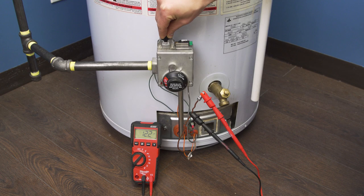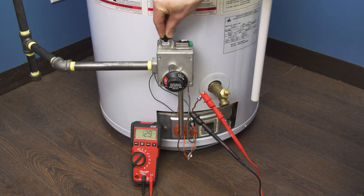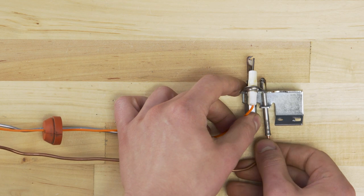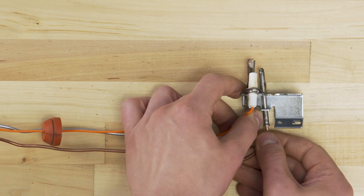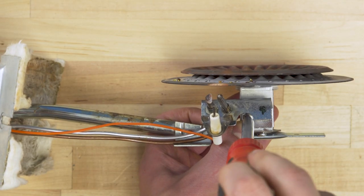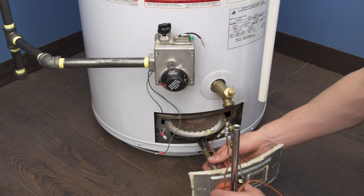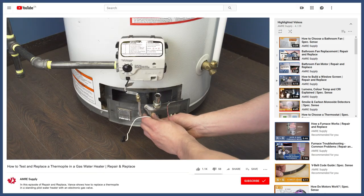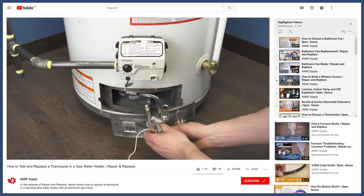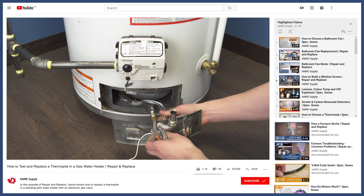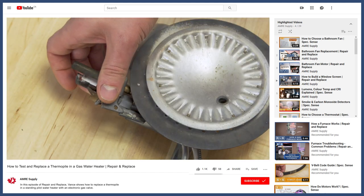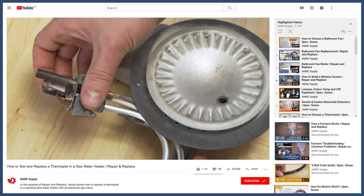In this episode we'll learn how to test the thermocouple to see if it's functioning correctly, then we'll learn how to clean and how to replace it. We'll be working on a standing pilot water heater with a conventional gas valve. Now if you have an electronic gas valve, then the repair will be a little different. You can learn more in the video linked in the description. Let's begin.